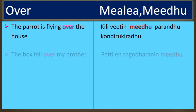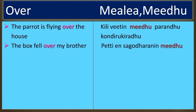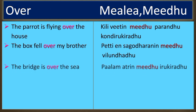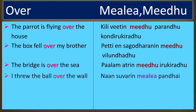The next example is: 'The box fell over my brother.' In Tamil: Petty enn sagodaranin meadu vilundudu. Petty means the box, enn sagodaranin meadu means 'over my brother', and vilundudu means 'fell'.